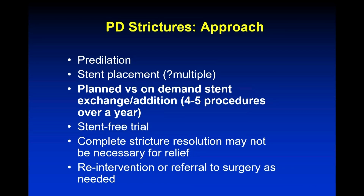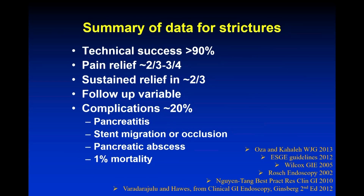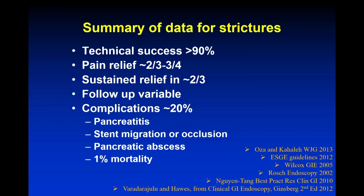In general, there's dilation, stent placement, perhaps multiple parallel stents, and eventually trying to upsize and find a stent-free trial. You don't necessarily need complete stricture resolution to provide long-term benefit, but fluoroscopic improvement is good to see. Technical success reported in some series is more than 90%, though that's probably a bit of an overestimation. Technical success and clinical success are not the same — just because you can put a stent across a stricture doesn't mean someone's pain will be better. Complications include post-procedure pain and pancreatitis, stent migration or occlusion, infection, and occasionally patients can become quite sick.